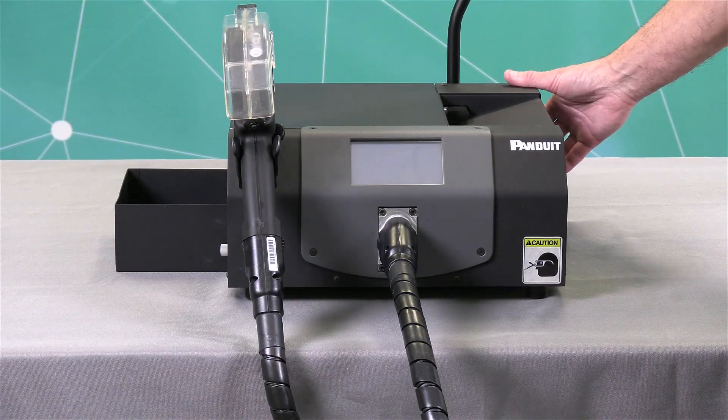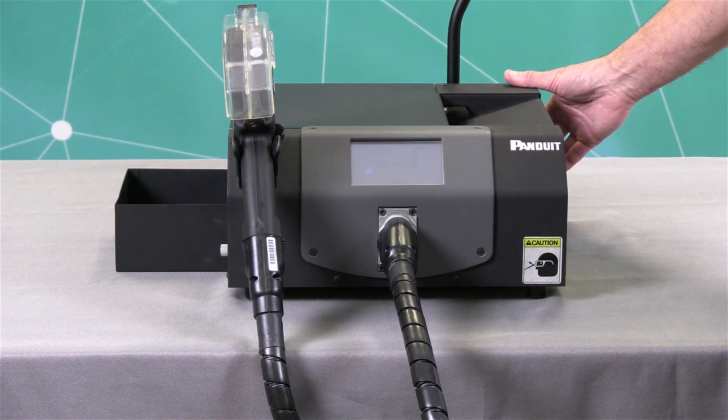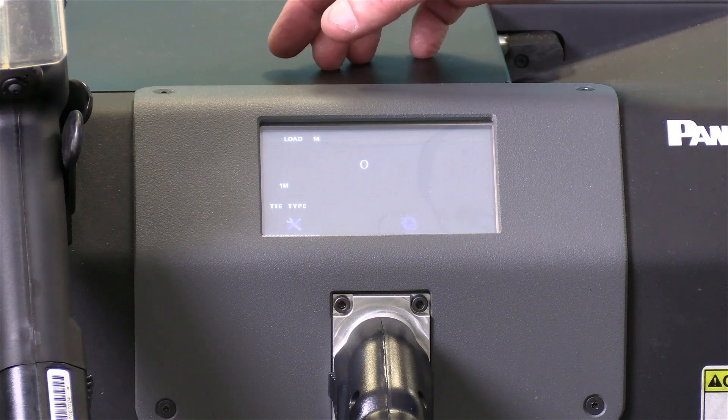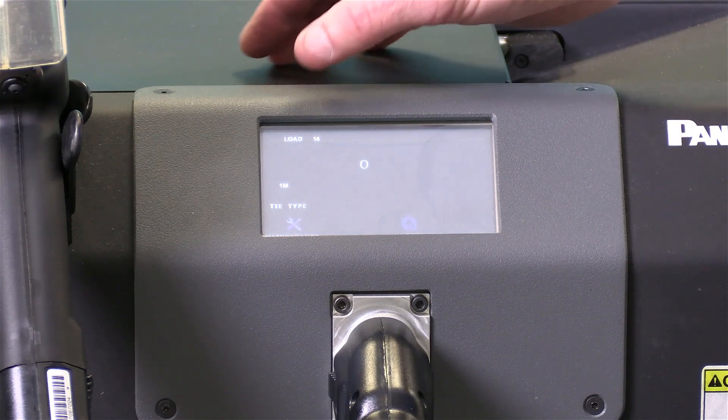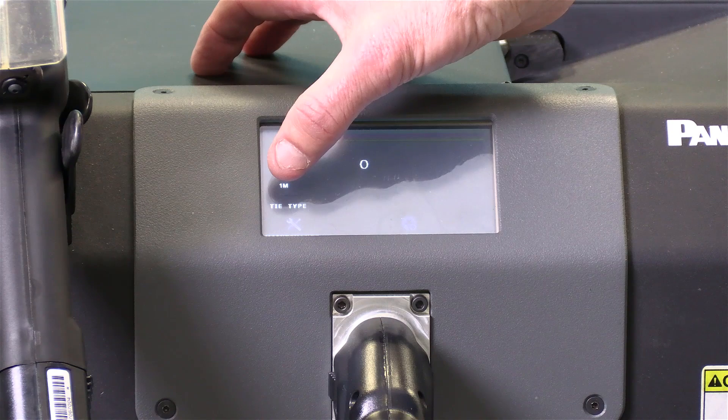Now we're going to power up the unit by pressing the toggle switch in the back of the dispenser. Prior to loading the real cable ties, press the tie type icon on the front of the dispenser.